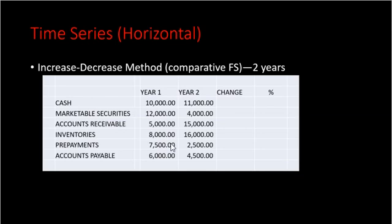In our example, we are going to evaluate the asset management of this company. We decided to choose the basic working capital components: cash, marketable securities, accounts receivable, inventories, prepayments, and accounts payable. We consider year two as our current year and year one as our base year. A base year is your standard year — the basis for evaluation — and if the problem is silent, we normally use the earlier year.